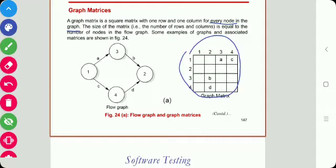This is the flow graph. From node 1 to node 4, there is one arrow named C, so from one to four we write C in the matrix. Then from one to three, there is A, so from one to three we write A.